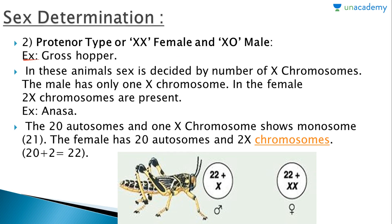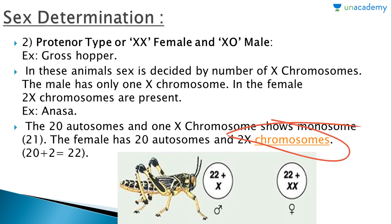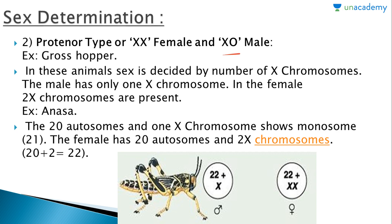The next type is the XO type — XX female and XO male — for example, seen in grasshoppers. Sex is decided by the number of X chromosomes. The male has only one X chromosome, while the female has two X chromosomes. For example, in Anasa, the male has 20 autosomes and one X chromosome (total 21), and the female has 20 autosomes and 2 X chromosomes (total 22).